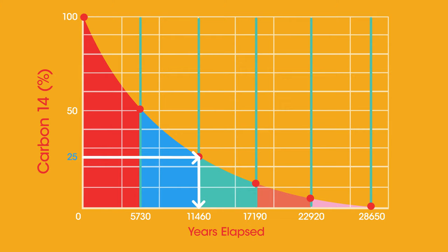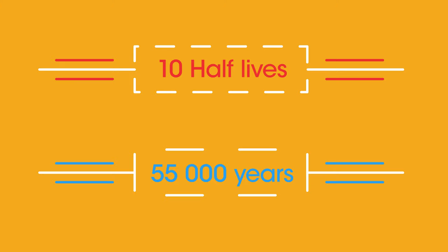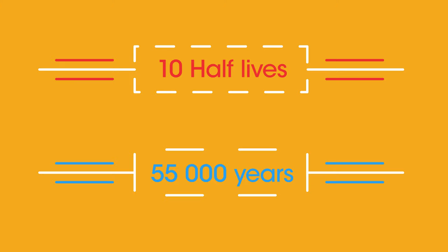There is a limit to how far radiocarbon dating is reliable. After about ten half-lives, or 55,000 years, there is so little C-14 remaining that measuring it with any degree of accuracy is impossible.